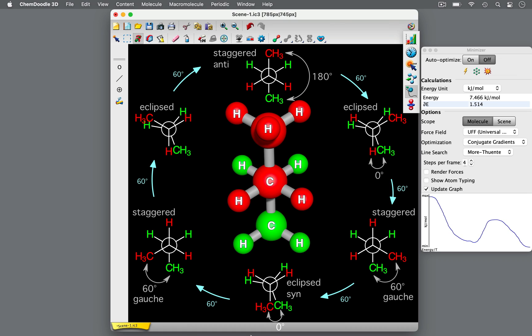Newman projections are helpful drawing conventions that convey conformations of a molecule about a single bond. A molecule can have multiple Newman projections, so remember to specify the bond and direction that you're looking at. Understanding how to interpret and draw Newman projections can help you to predict a molecule's conformational analysis.